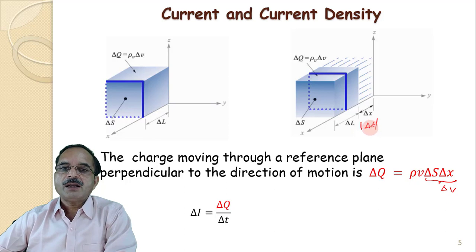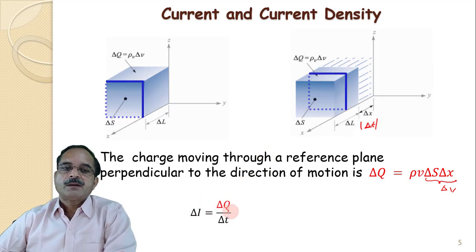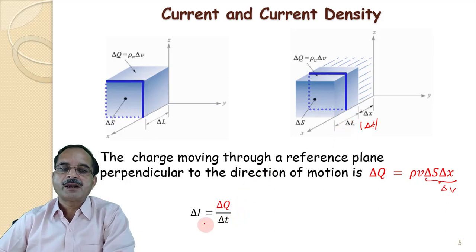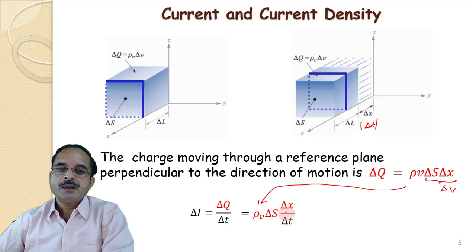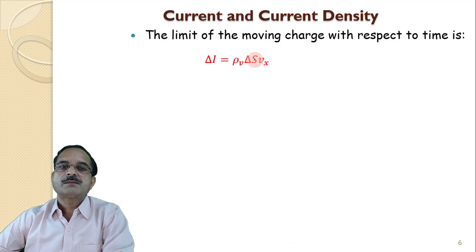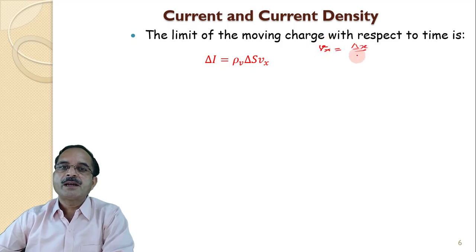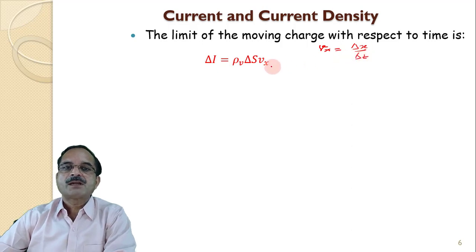Within the time interval delta T, the total change in charge is delta Q. So delta Q upon delta T gives delta I, which is the rate of change of charge — that means current. Substituting, this is rho V times delta S times delta x upon delta T. Here, delta x upon delta T is displacement divided by time, which is nothing but velocity Vx. So Vx is the displacement delta x in the time interval delta T, that is, velocity Vx.